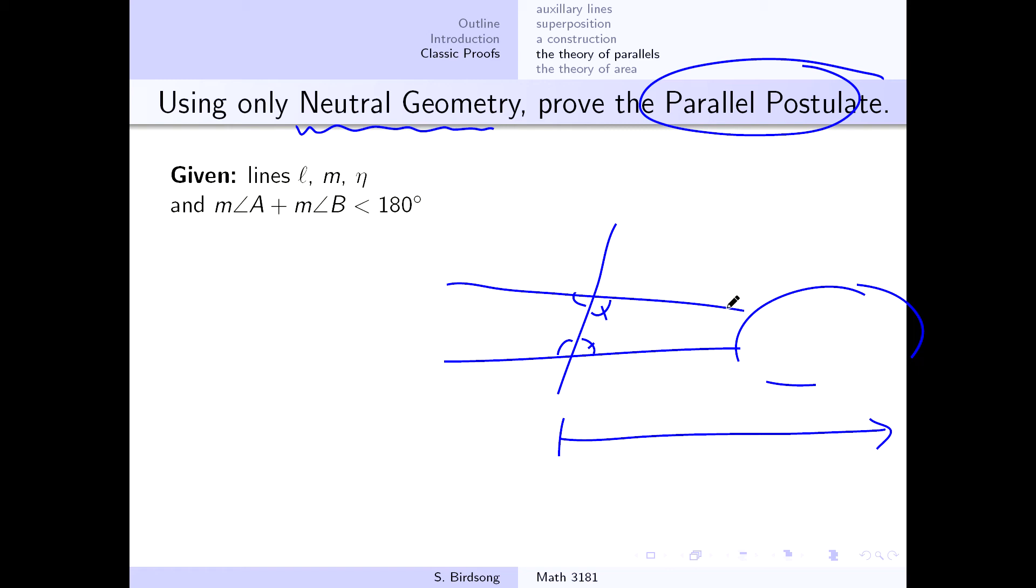So what we're going to start with is we're going to start with our three lines, or two lines that might be parallel, and I don't believe that's how I actually wrote them. Our two lines that might be parallel, and then our transversal, and we're going to assume that two of the angles, their sum of their degrees is less than 180 degrees.